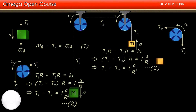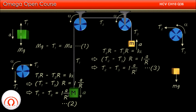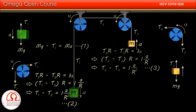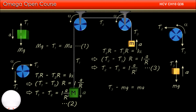Finally, in the free body diagram of the block on the right, gravitational force mg pulls the block downward, tension T3 pulls it upwards, and the block is moving upward with acceleration a. Net force in the upward direction, that is T3 minus mg, must be equal to ma.